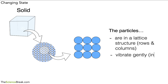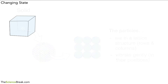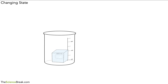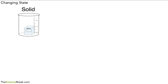The other thing to remember is that the particles vibrate gently in their positions. So this is how the particles are arranged and how they behave in a solid material, for example some ice. Now let's imagine we could melt this ice — we could put it in a beaker so that we could heat it. There it is, the solid in a beaker, ready to be heated.